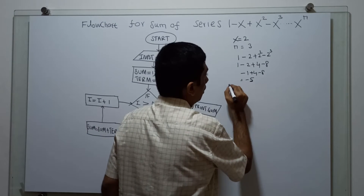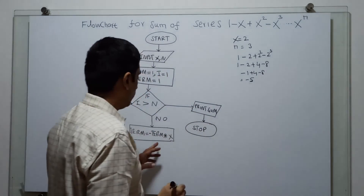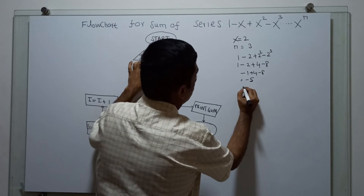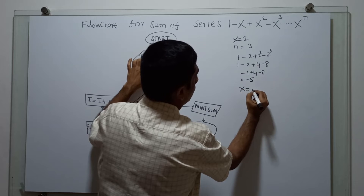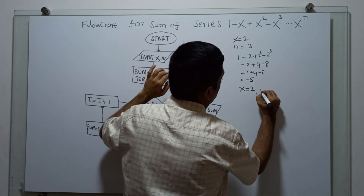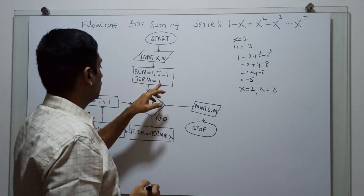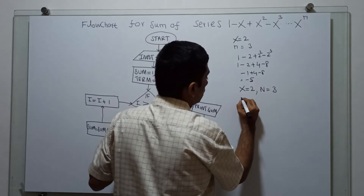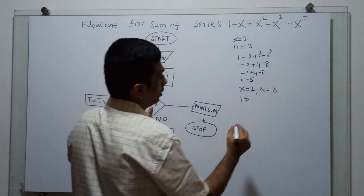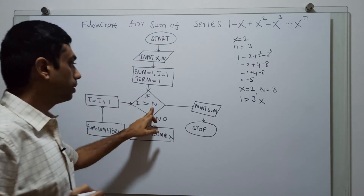Now we will trace the flowchart to see how it works. I am having x equal to 2 and n equal to 3. I equal to 1. I am checking: is 1 greater than 3? This is false.